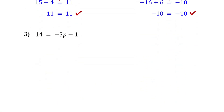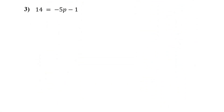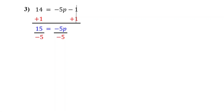Now what if the variable is on the right side? That is okay — it doesn't matter which side the variable is on; we solve it exactly the same way. First, isolate negative 5p by adding 1 to both sides. On the right, negative 1 plus 1 cancel out, leaving p. On the left, 14 plus 1 is 15. Next, get p by itself by dividing both sides by negative 5. On the right, the negative 5s cancel out, leaving p. On the left, 15 divided by negative 5 gives us negative 3. So the solution is p equals negative 3. By the way, you can always write the variable first if you like — no problem at all.